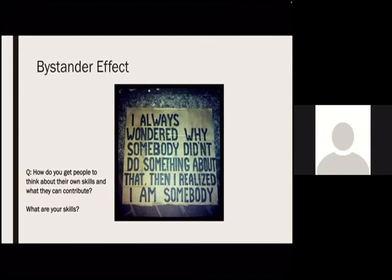The final thing we'll come up against when going out into the community is the bystander effect — how do we get people to think about their own skills and how they can contribute? A lot of people think: I'm not going to pick that litter up because someone else will do it. How do we get people to start taking responsibility for their own community and get on board with what we're doing? Those are the four barriers you might come up against, but once you challenge them people will start to open up and get really excited about what you're doing.